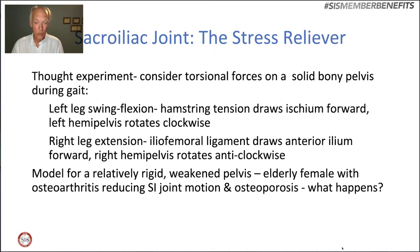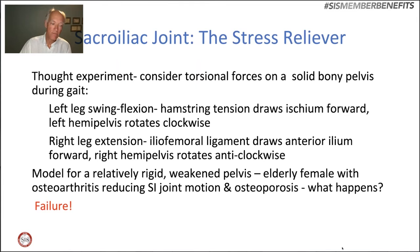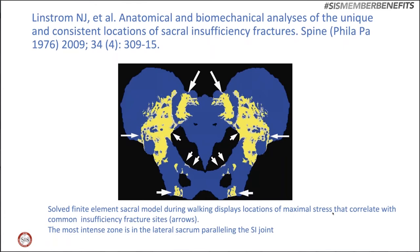We have a model for a rigid weakened pelvis: an elderly female with osteoarthritis reducing SI joint motion and osteoporosis — and it fails exactly as it did here. Here is a solved finite element sacral model during walking showing locations of maximal stress. The maximal stress occurs along the lateral aspect of the sacrum, adjacent to the sacroiliac joint. We also see significant stress in the iliac wing and the pubic rami — areas where we may see additional insufficiency fractures.